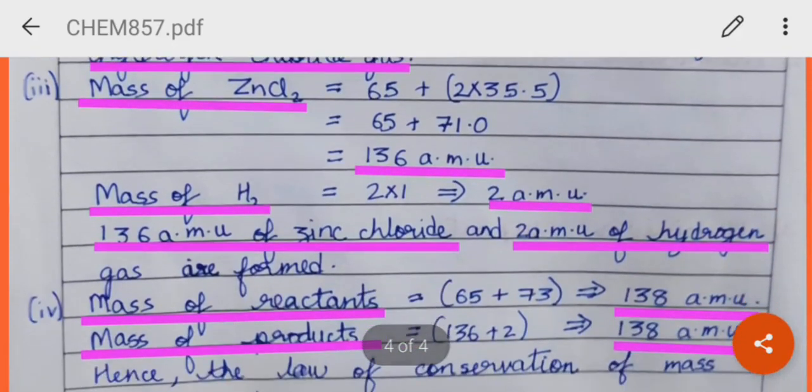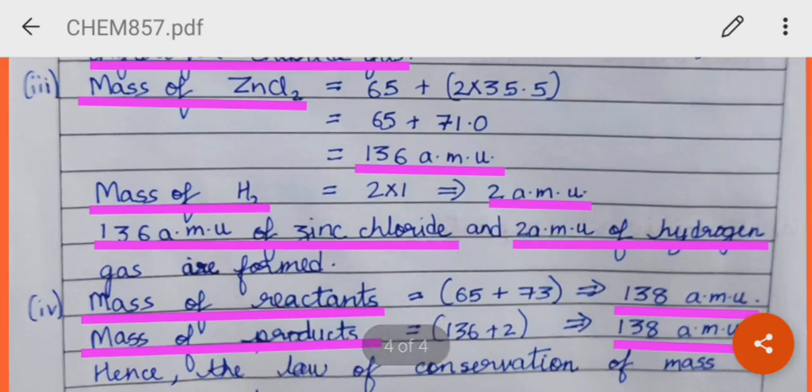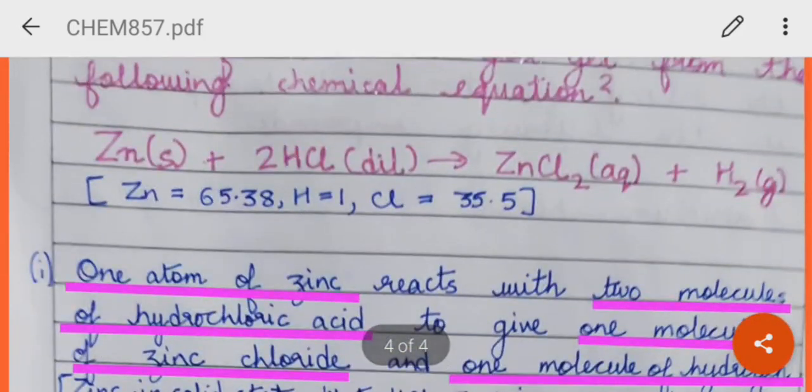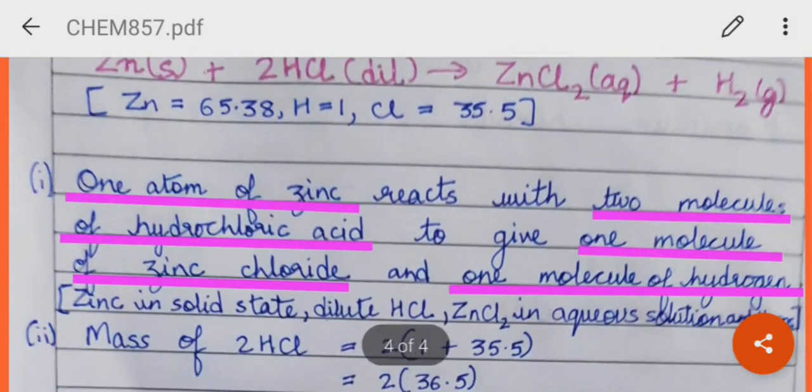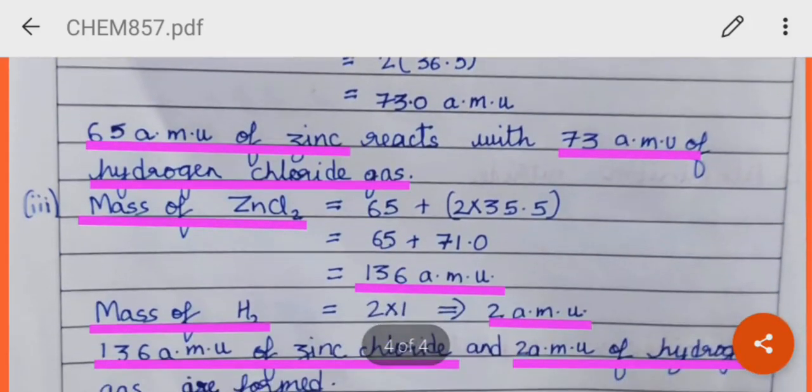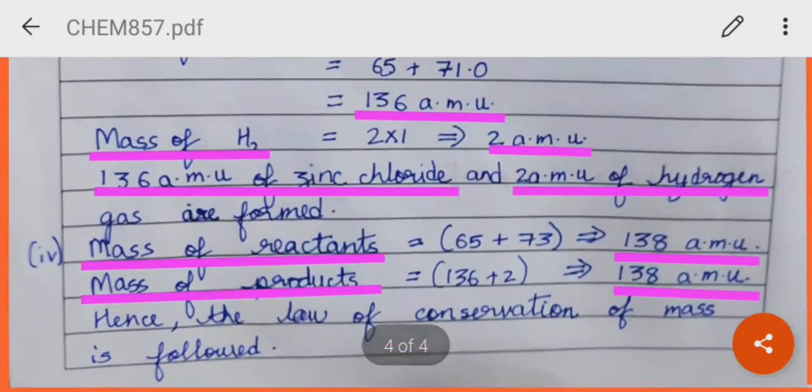So, we can say that 136 atomic mass unit of zinc chloride and 2 atomic mass unit of hydrogen gas are formed. So, what are the mass of reactants? On adding, we get 65, which is the atomic mass of zinc, plus 73, which is the molecular mass of 2HCl. So, it is equal to how much? It is equal to 138 atomic mass unit.